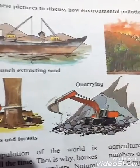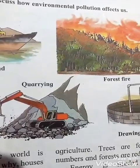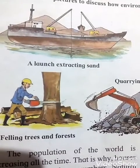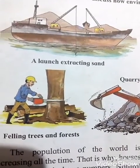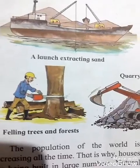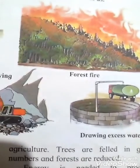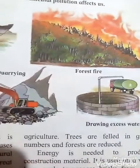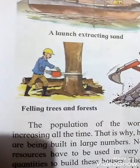Use these pictures to discuss how environmental pollution affects us. First picture shows a ship — a launch extracting sand from the sea or riverbeds. Next picture shows a forest fire, which causes air pollution. Another picture shows a man felling trees in a forest — tree cutting.